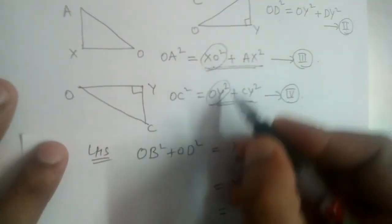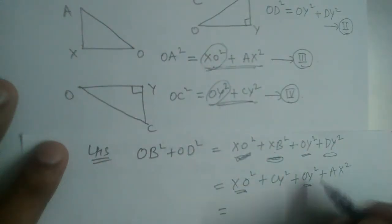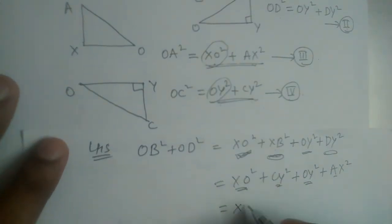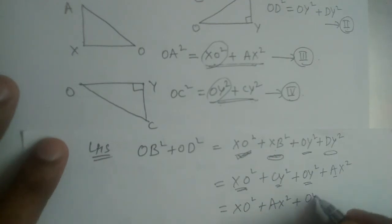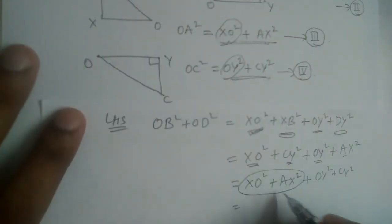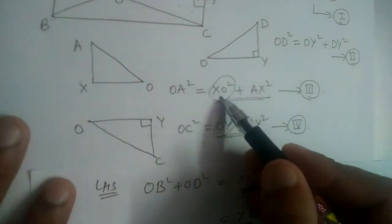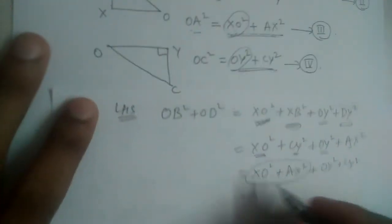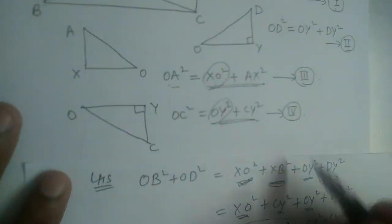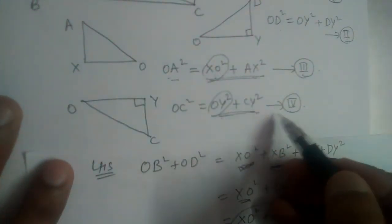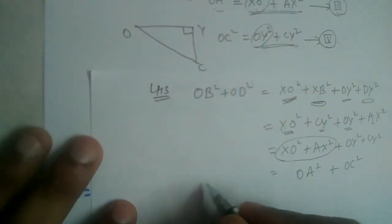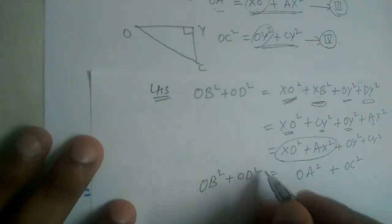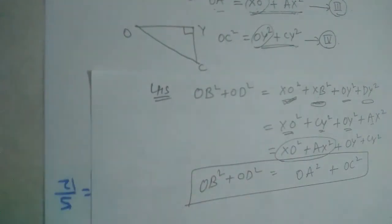Now if you see carefully, XO² + OY² + AX² + CY² — let us rearrange: XO² + AX² + OY² + CY². From equation three, XO² + AX² = OA². And from equation four, OY² + CY² = OC². So hence we have OB² + OD² = OA² + OC².